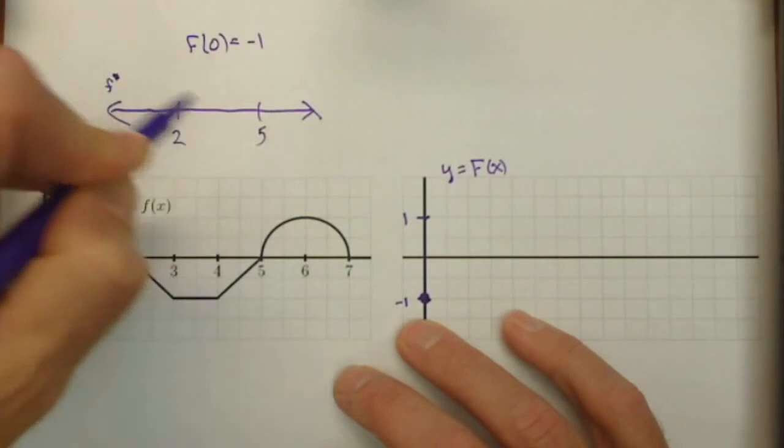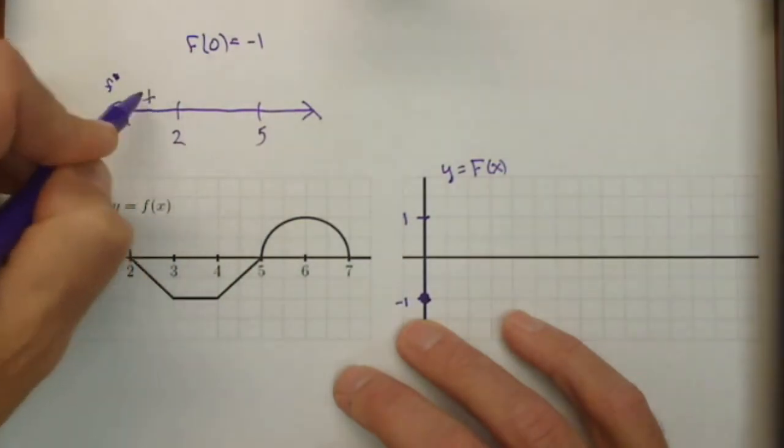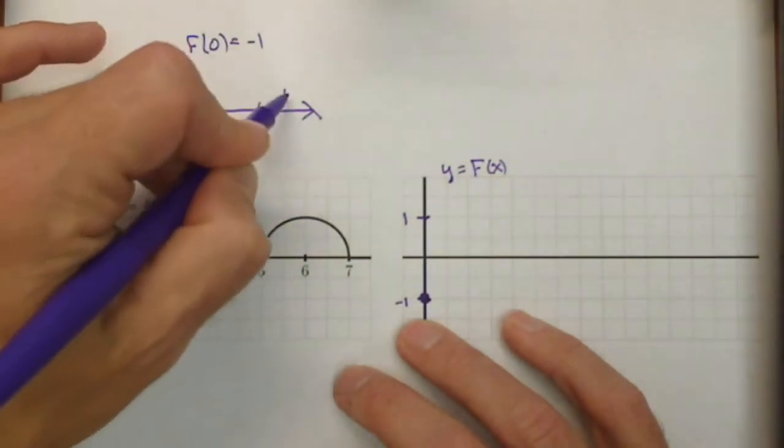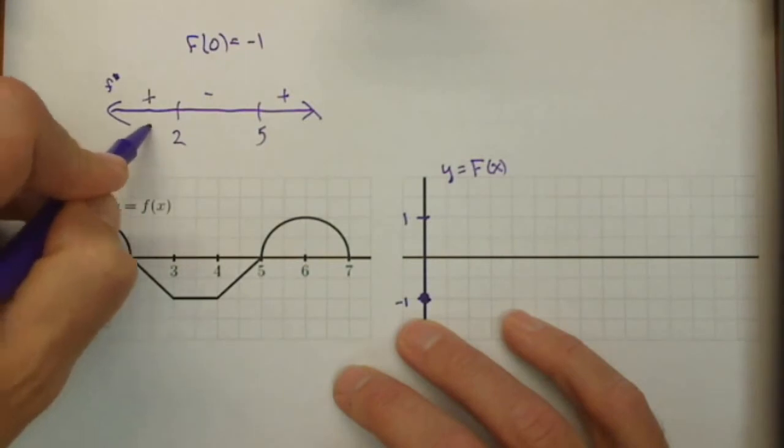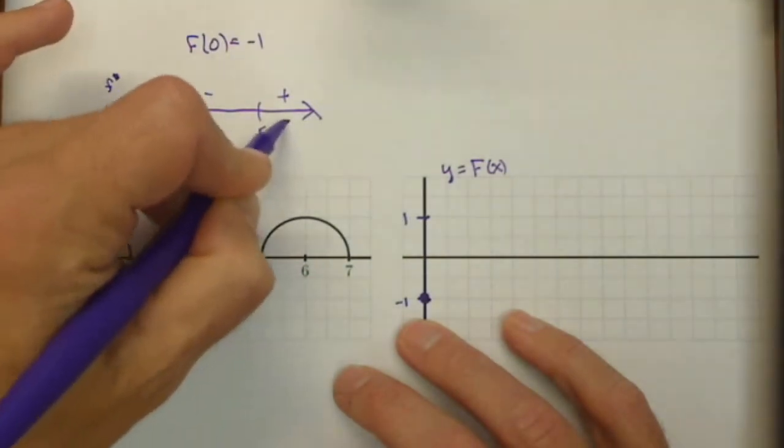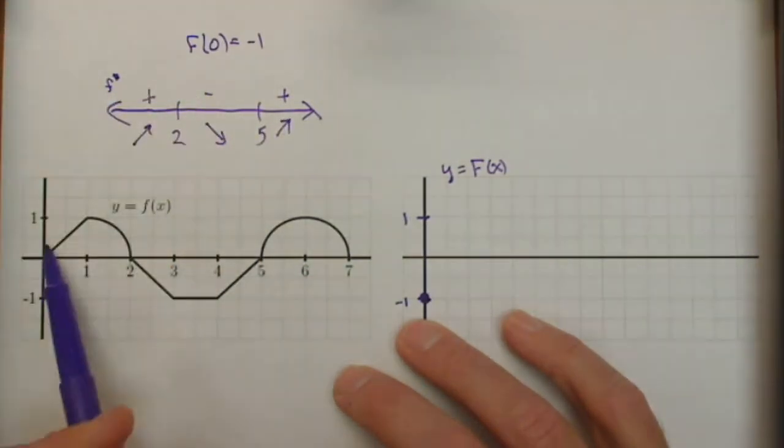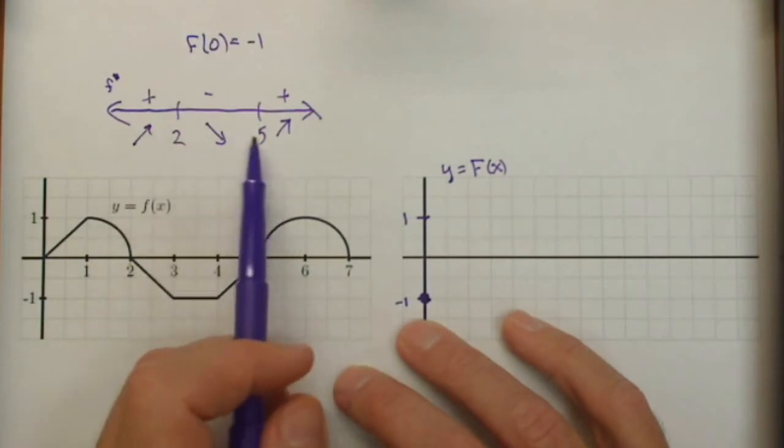Let's look at where it's 0 first. 2 and 5. So it goes positive, negative, positive. So our function is going to go increasing, decreasing, increasing. So it's increasing from 0 to 2, decreasing from 2 to 5.